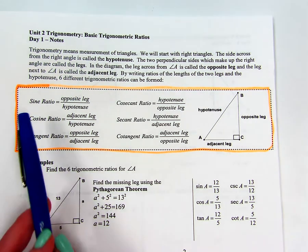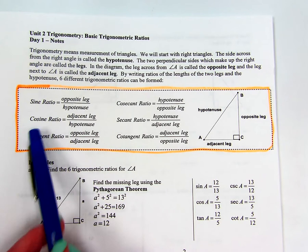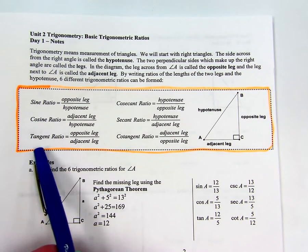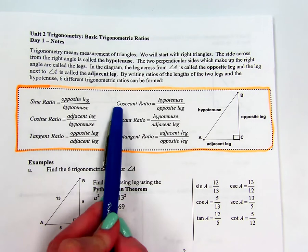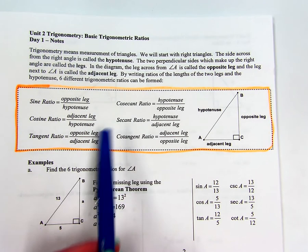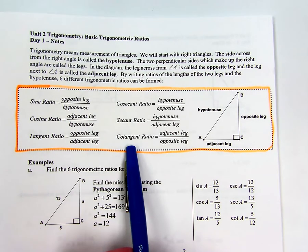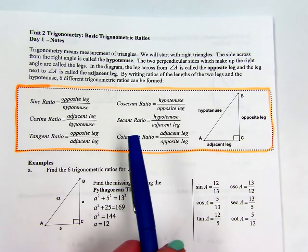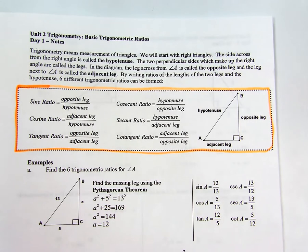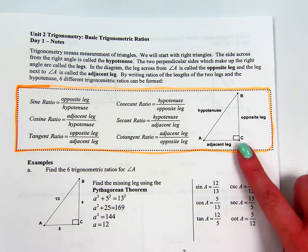So for trigonometry, we have sine, cosine, tangent, cosecant, secant, and cotangent. All of these are talking about relationships with a triangle — a right triangle.